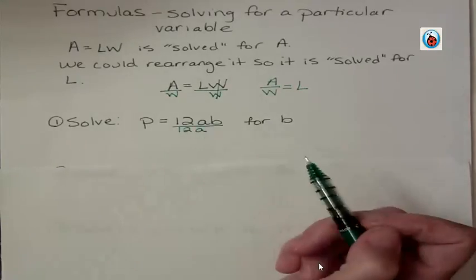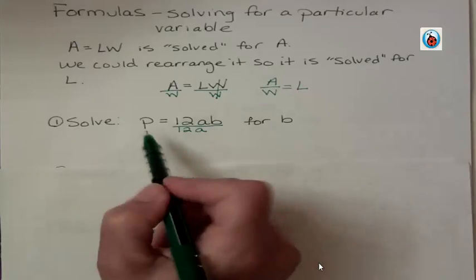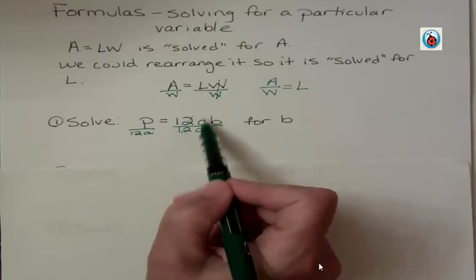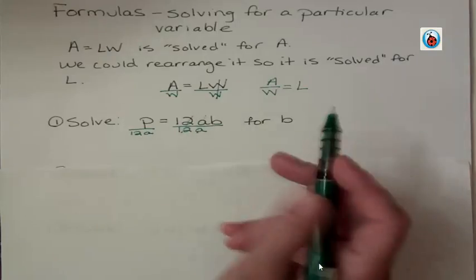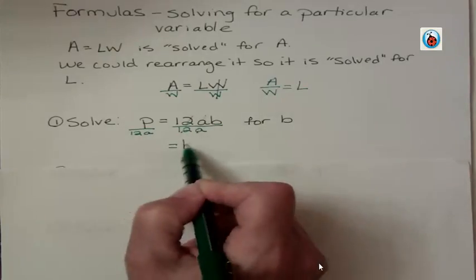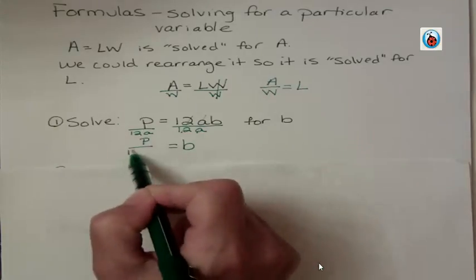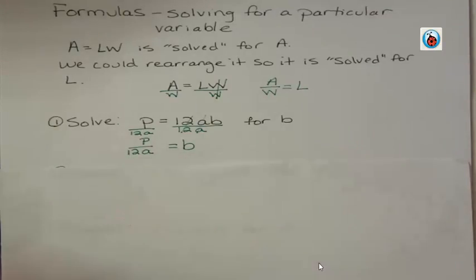We can get rid of as many things as we want, but just being multiplied. In order to get rid of it over here, we divide. We have to do the same thing over here. So what happens is those things cancel out. And now we have B isolated, but over here we have P over 12A. That's solving that for B. We could solve it for A by dividing by B instead.